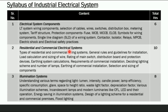The second chapter covers Residential and Commercial Electrical Systems, including types of residential and commercial wiring systems, general rules and guidelines for installation, load calculation and sizing of wire, rating of main switch, and more.